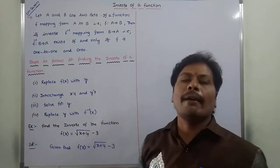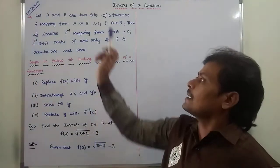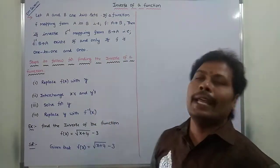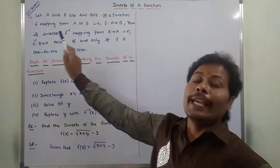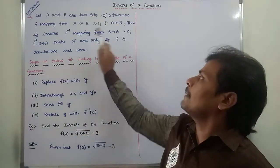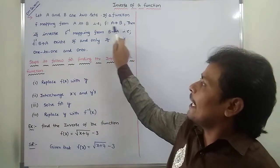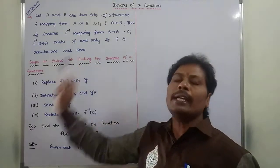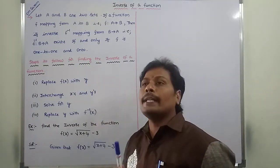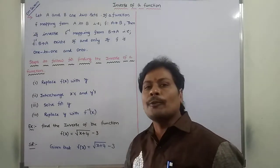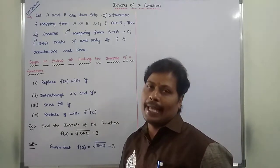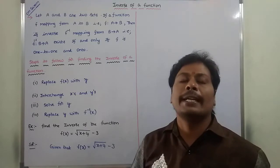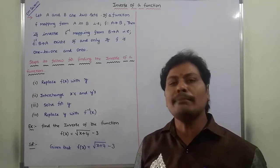Let A and B be two finite sets, and let F be a function mapping from A to B. Its inverse is denoted by F inverse, mapping from B to A. This inverse F inverse from B to A exists if and only if F is a one-to-one and onto function. Whenever the given function F is one-to-one and onto, then its inverse exists.